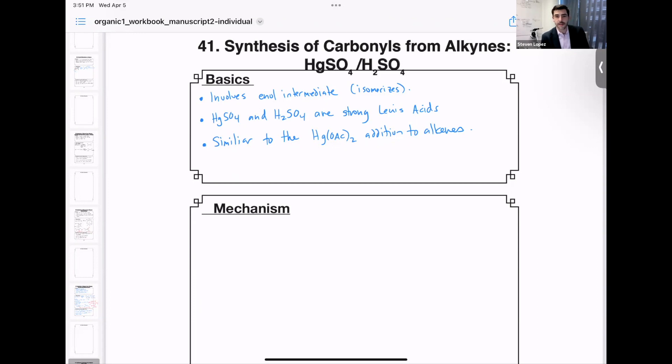This involves the addition of mercuric sulfate and sulfuric acid. Now both of these are strong Lewis acids. We have an enol intermediate, which isomerizes to the keto form, and this is similar to the mercuric acetate addition in alkenes from a few episodes ago.